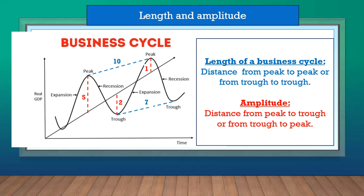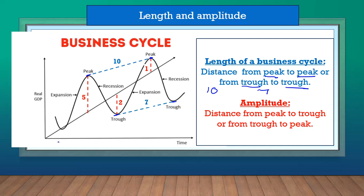Let's define the length of a business cycle and the amplitude. The length of the business cycle is the distance from peak to peak, or it could be the distance from trough to trough. Looking at this graph, from the first peak to the next peak we have a distance of 10 — that's the first length. From trough to the next trough, that length is 7.